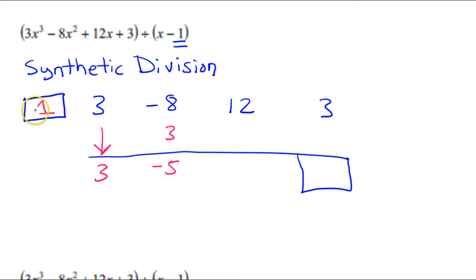I repeat. Negative 5 times 1 is negative 5. Add these up, and you get 7. 7 times 1 is 7. And if you add these up, you get 10.